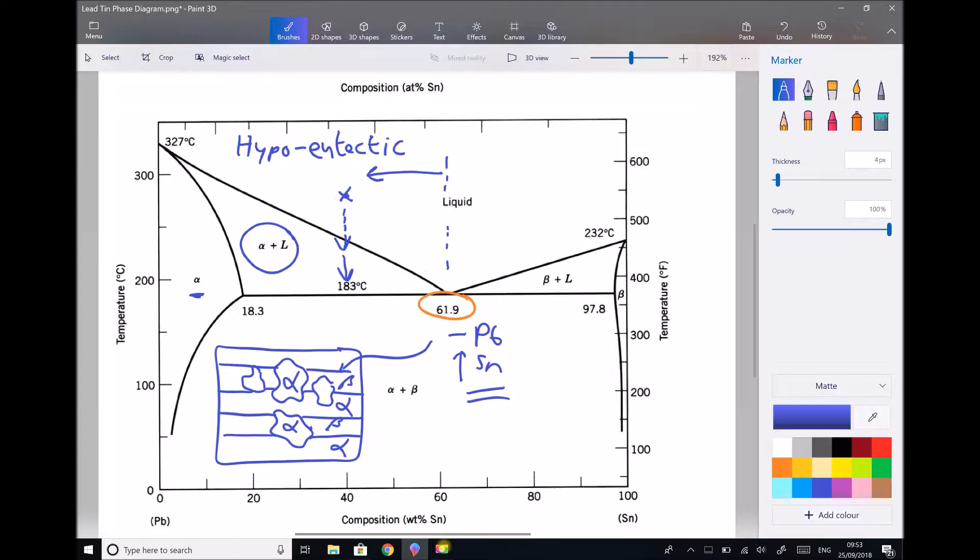So our original composition hasn't changed, the overall composition of this material is still 40% tin, but in the layered section, the composition is 61.9% tin, and in these grains here, the composition is lead rich alpha.